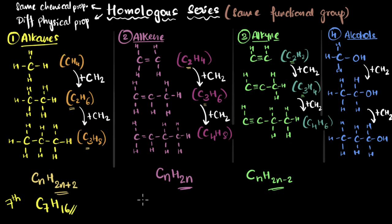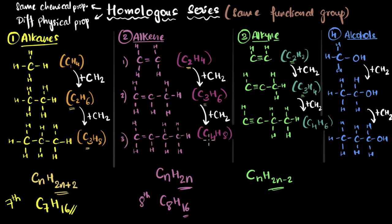What if I ask you to write down the eighth member of alkene? We need to be careful here. For alkanes, the first member has one carbon, second has two, third has three. But for alkenes and alkynes, the first member itself has two carbon atoms, the second has three, the third has four. This means any member will have one more carbon than its member number. So the eighth member of alkene has nine carbon atoms, giving C₉H₁₈.